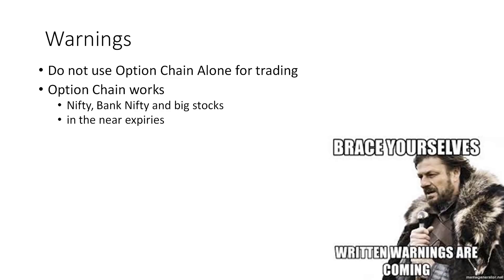It works for near expiry only. If you're in the third week of February, the near weekly and near monthly Nifty option chains work — but the third week of March or end of April do not work right now. Keep your analysis to near weekly and near monthly. Also use only liquid, heavily traded stocks — SBI option chain works, but Ajanta Pharma or Jubilant Foodworks may not be reliable.